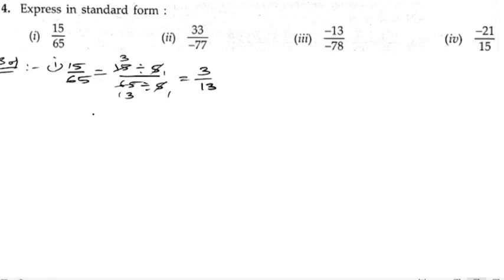We need to check in the whole problem the highest common factor, otherwise you can say the common factor. So the second bit: 33 by minus 77. Here the highest common factor is 11.